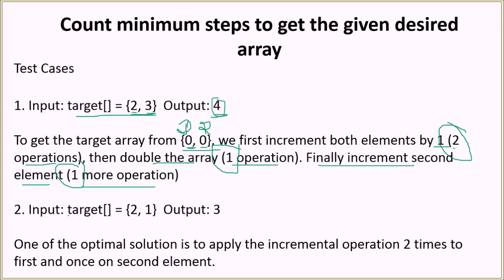In the second example, the target array is [2, 1] and the minimum operations is 3. We apply the increment operation twice to the first element and once to the second element, giving us [2, 1] directly.